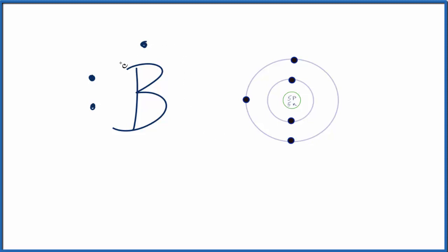We also know that boron has three valence electrons in its outer shell because it's in group 13, sometimes called 3A, on the periodic table.